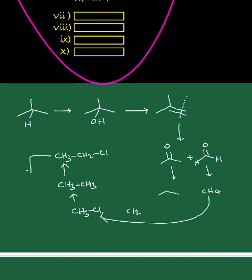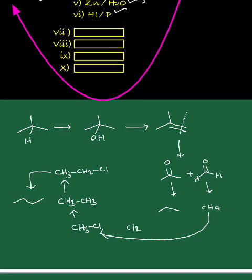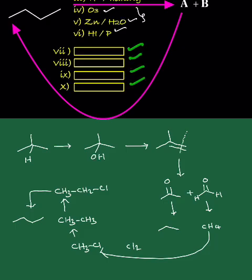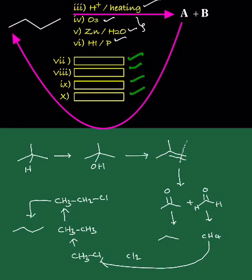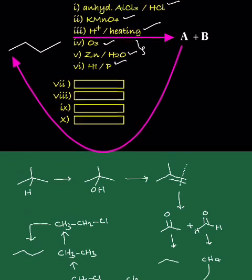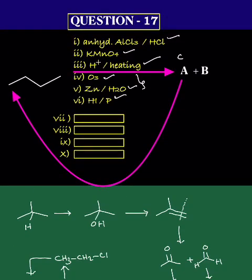The first is monochlorination, then Wood's reaction produces ethane. Monochlorination, then Wood's reaction produces n-butane. Therefore, finally, A is methane and B is ethane.